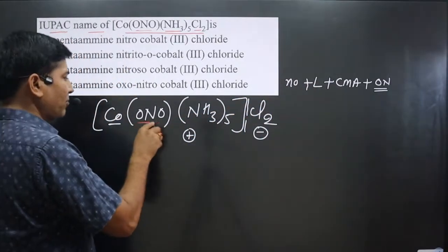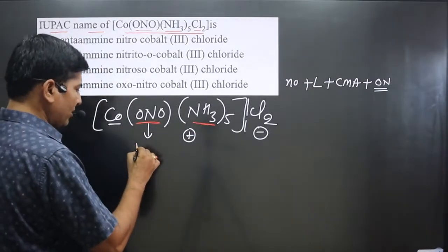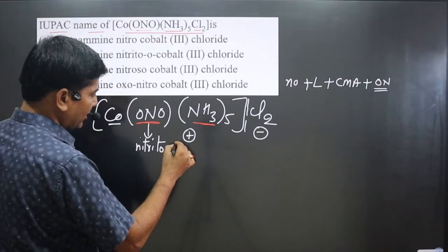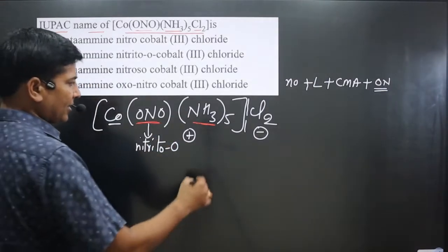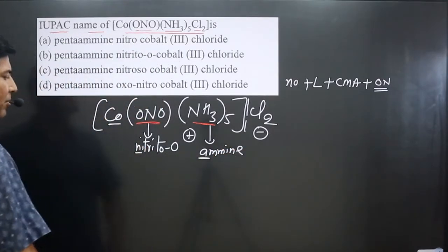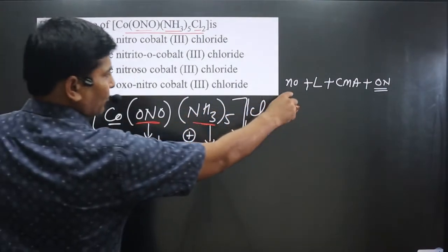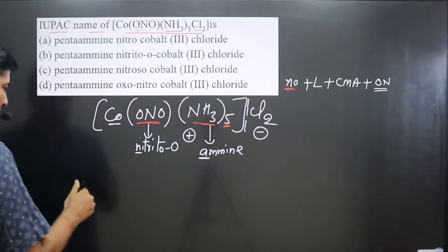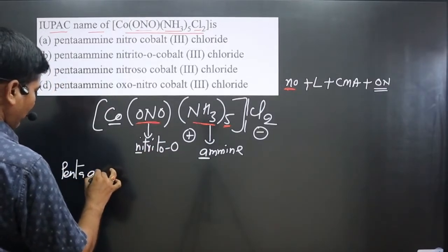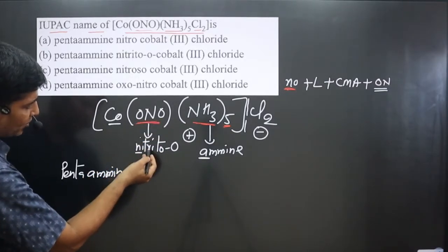More than one type of ligand is present here. The ambidentate ligand has oxygen donating electron density, so its IUPAC name is 'nitrito-O'. Ammonia is named 'amine'. Following alphabetical order, 'amine' (starting with A) comes before 'nitrito' (starting with N). So first we name the ammonia ligands: there are five, giving 'pentaamine'. Then we have the one nitrito-O ligand.